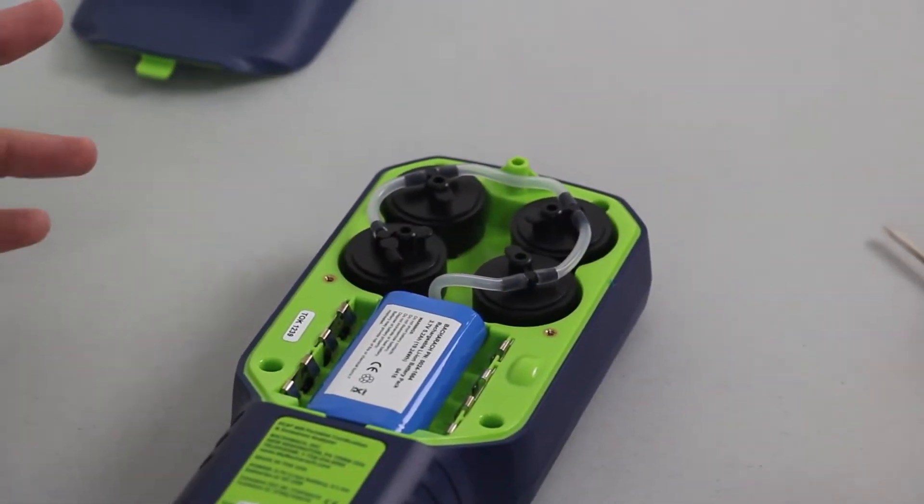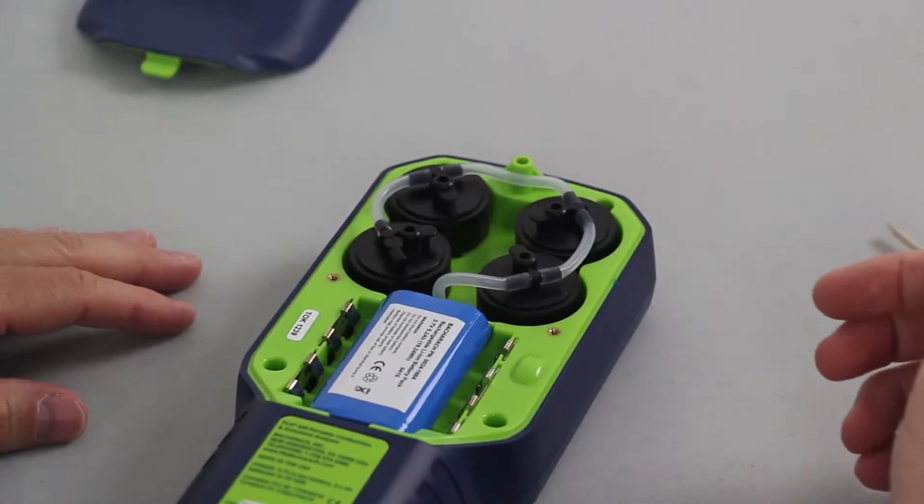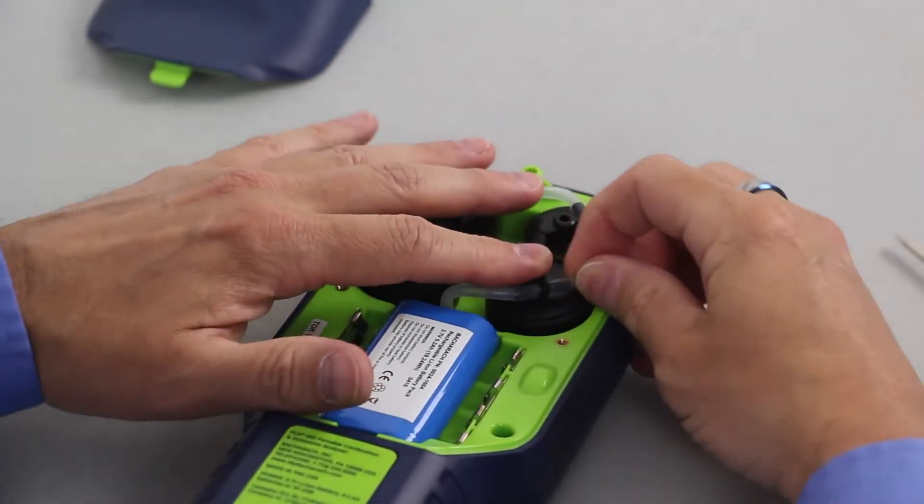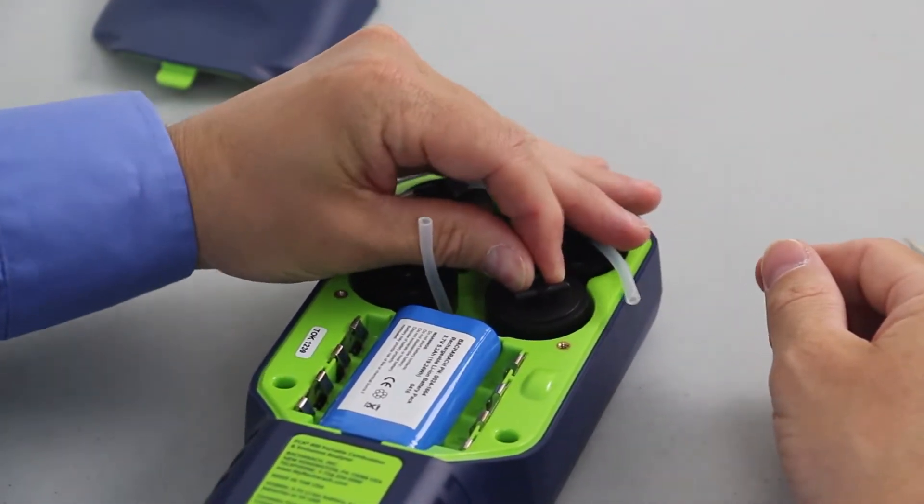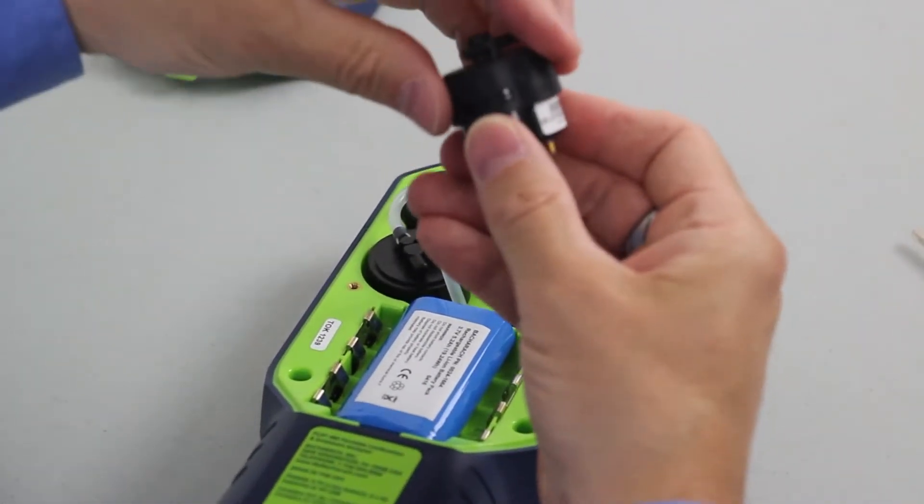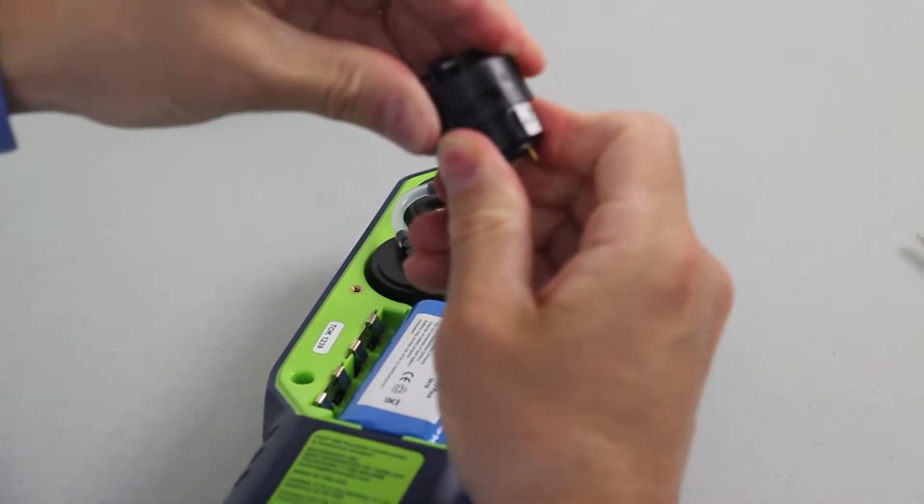Now that we have access to the sensor compartment, locate the sensor you're about to replace. Remove the sensor tubing. Grasp the sensor cap and pull straight up. Twist the sensor cap off of the old sensor, setting it aside.